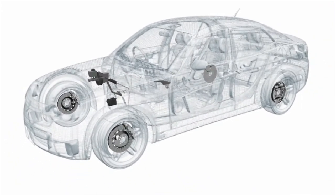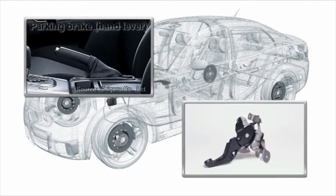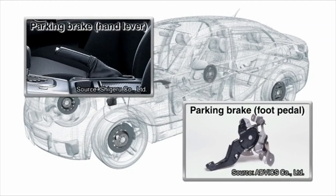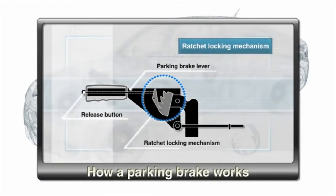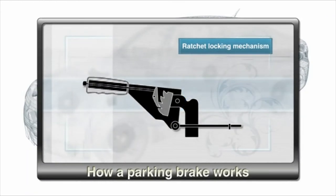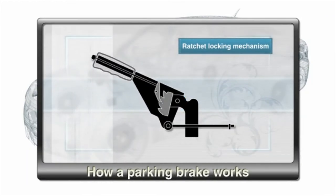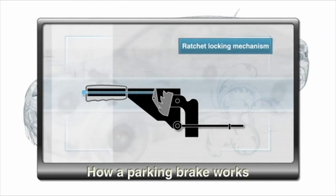Both drum and disc brakes use friction materials that wear out over time and must be replaced periodically. The parking brake keeps parked cars stationary using a cable mechanism, without any use of hydraulic pressure. Some types use a handbrake lever while others are operated by foot. The parking lever uses a ratchet locking mechanism that only allows movement in one direction; the brake remains engaged until the driver presses the release button.